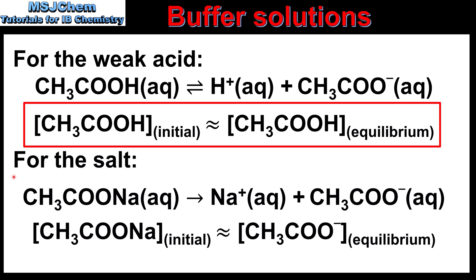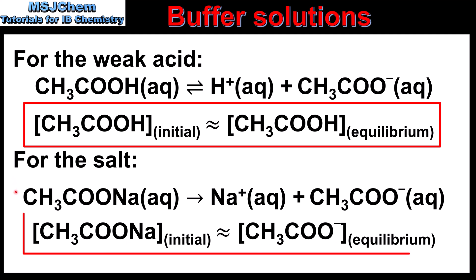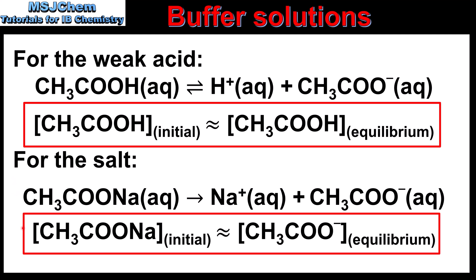For the conjugate base, which comes from the salt of the weak acid and a strong base, we assume complete dissociation. So we can assume that the initial concentration of the salt is the same as the equilibrium concentration of the conjugate base. To summarize: for the weak acid, the equilibrium concentration equals the initial concentration, and for the conjugate base, its equilibrium concentration equals the initial concentration of the salt.